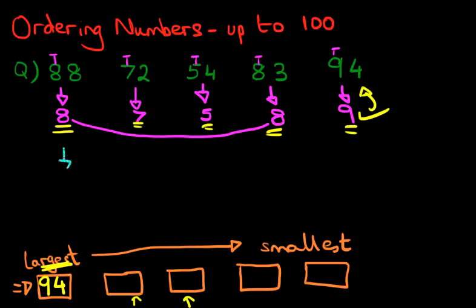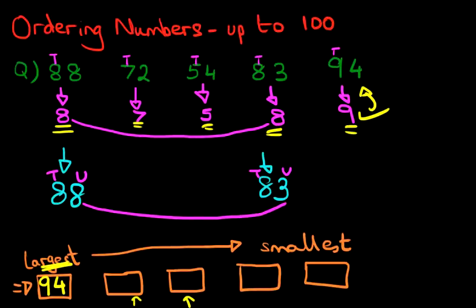So let's just change color here. We have got eight. This number is 88. What's this number? This number is 83. And as we have said, the tens is eight here and eight here. So we cannot work with that. We have to look then towards the units. So we've got eight and three. We've got eight units on the left and three units on the right.